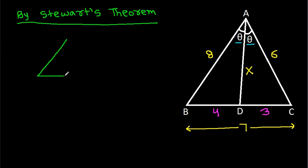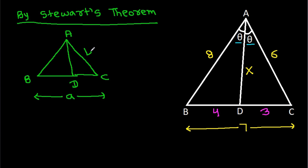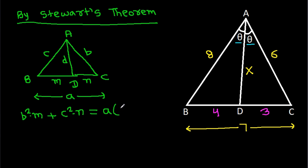In any triangle ABC, with D on BC, if BC is A, AC is B, AB is C, AD is D, BD is M, and CD is N, then by Stewart's Theorem: B squared times M plus C squared times N equals A times D squared plus M times N.